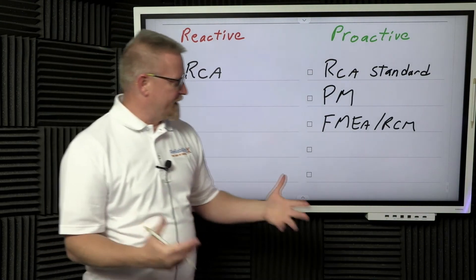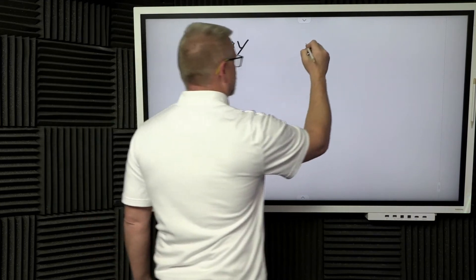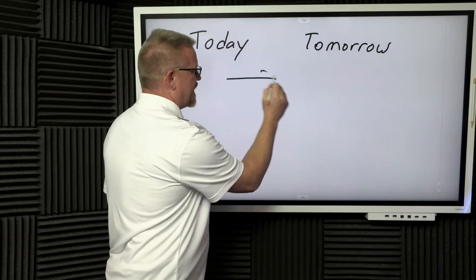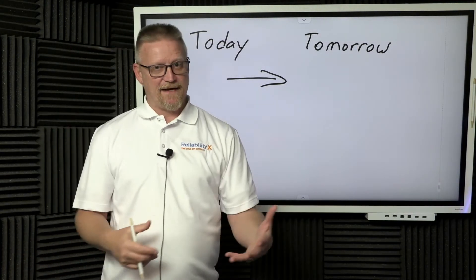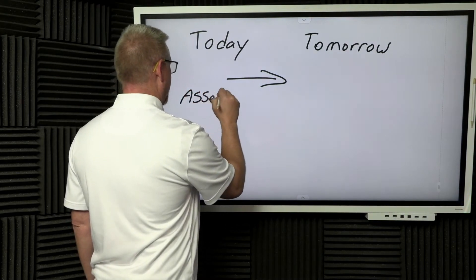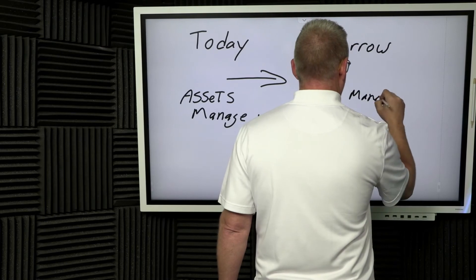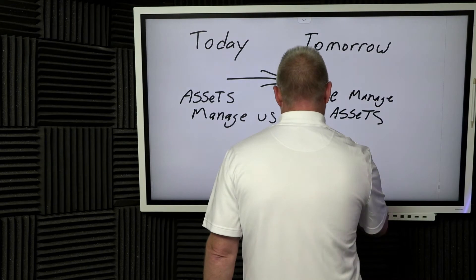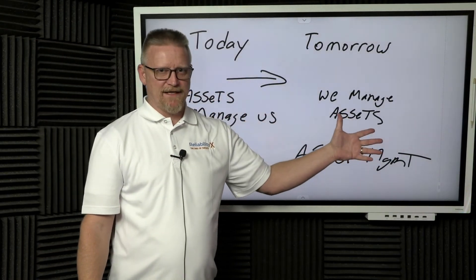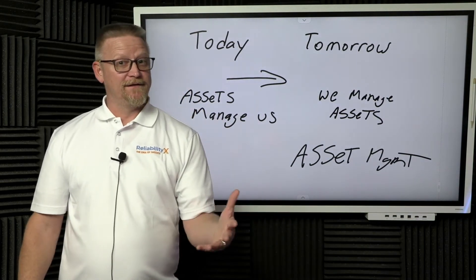Let's break this down into the simplest terms. Whatever you're doing today, if you take steps to make tomorrow better — if you take steps to create control — moving from the assets managing us, to we managing the assets, you are proactively taking steps. You are taking steps towards asset management, and asset management tends to lead to improved reliability.